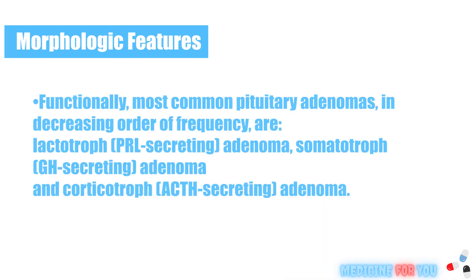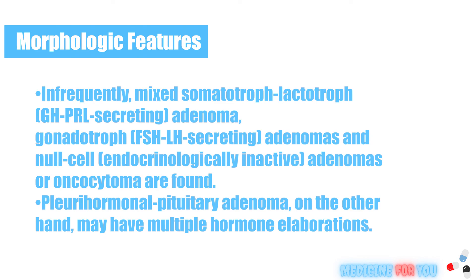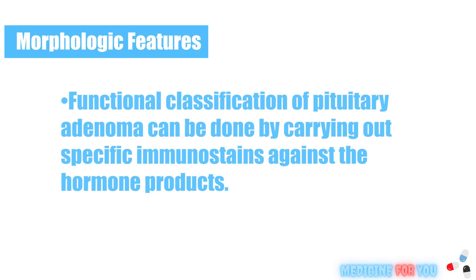Functionally, the most common pituitary adenomas in decreasing order of frequency are: lactotroph (PRL-secreting) adenoma, somatotroph (GH-secreting) adenoma, and corticotroph (ACTH-secreting) adenoma. Infrequently, mixed somatotroph (GH/PRL-secreting) adenoma, gonadotroph (FSH/LH-secreting) adenomas, and null cell (endocrinologically inactive) adenomas or oncocytoma are found. Plurihormonal pituitary adenoma may have multiple hormonal aberrations. Functional classification of pituitary adenoma can be done by carrying out specific immunostains against the hormone products.